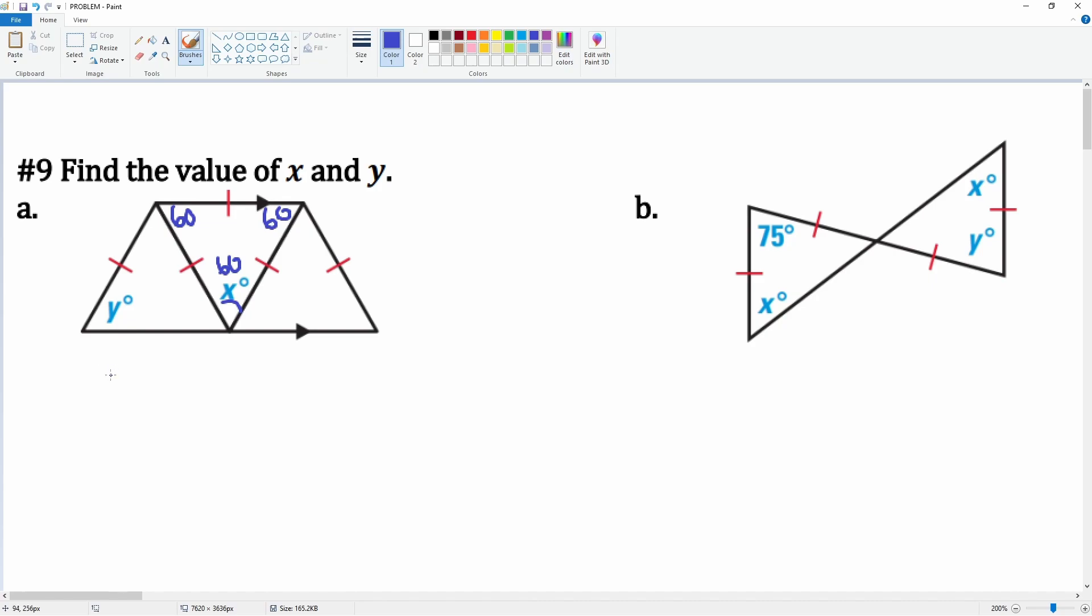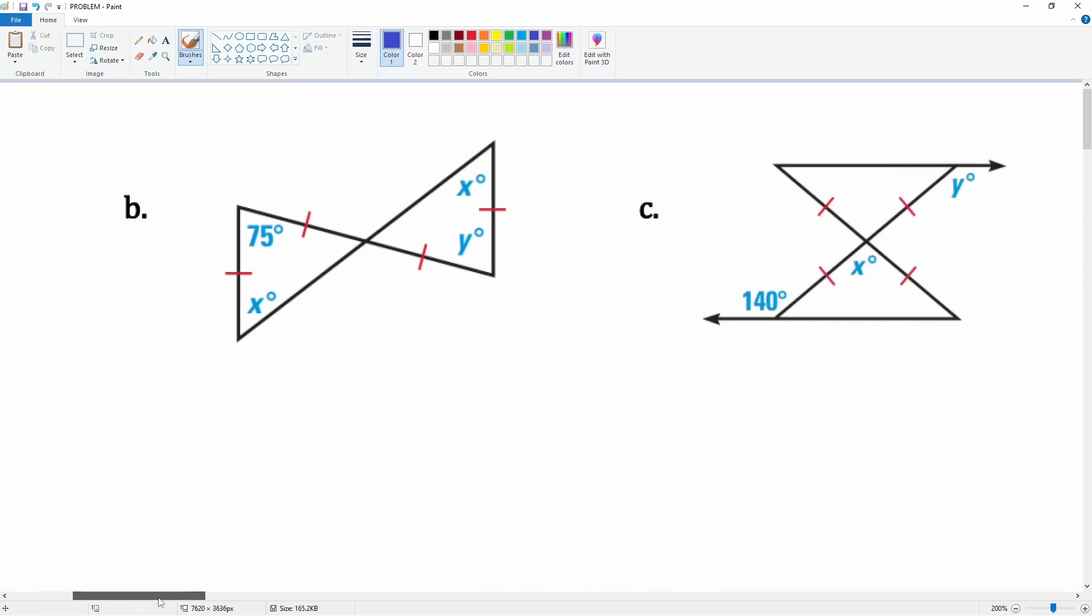So angle x is also going to be equal to 60 degrees. Notice that this angle is 60 degrees, and this tells you that it is 60, so this is also going to be 60 by default. So y is going to be equal to 60 degrees as well because the side gives you a relationship to its opposite angle.